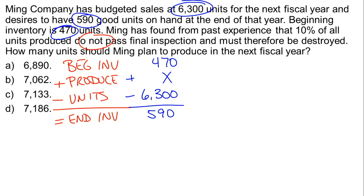We solve for X and we get X is equal to 6,420. 6,420 is what it is that they need to actually produce in order to be able to achieve the sales and the ending inventory goal that they have. Now there's very good news for us right here, and the good news is that this 6,420 isn't a choice.